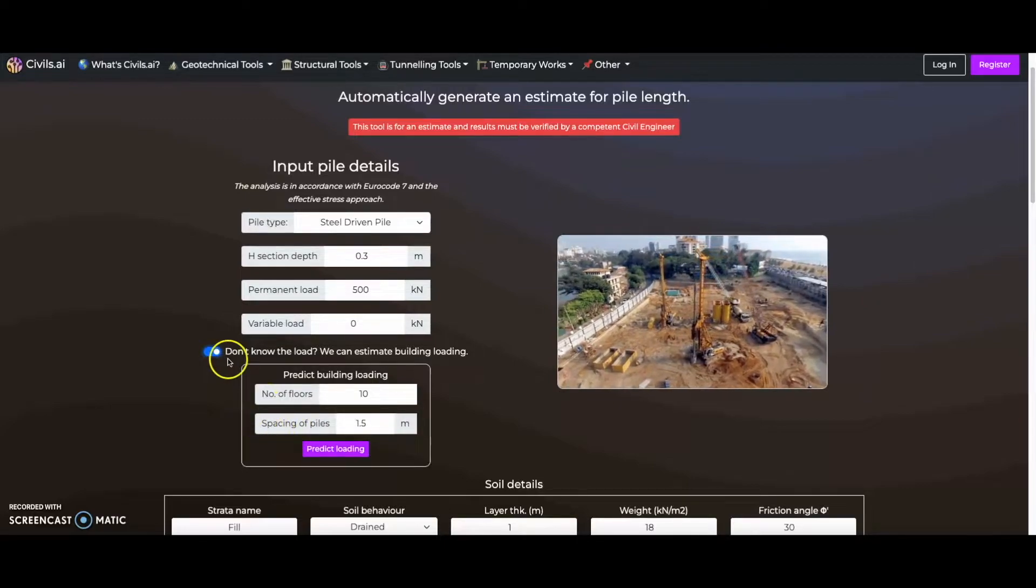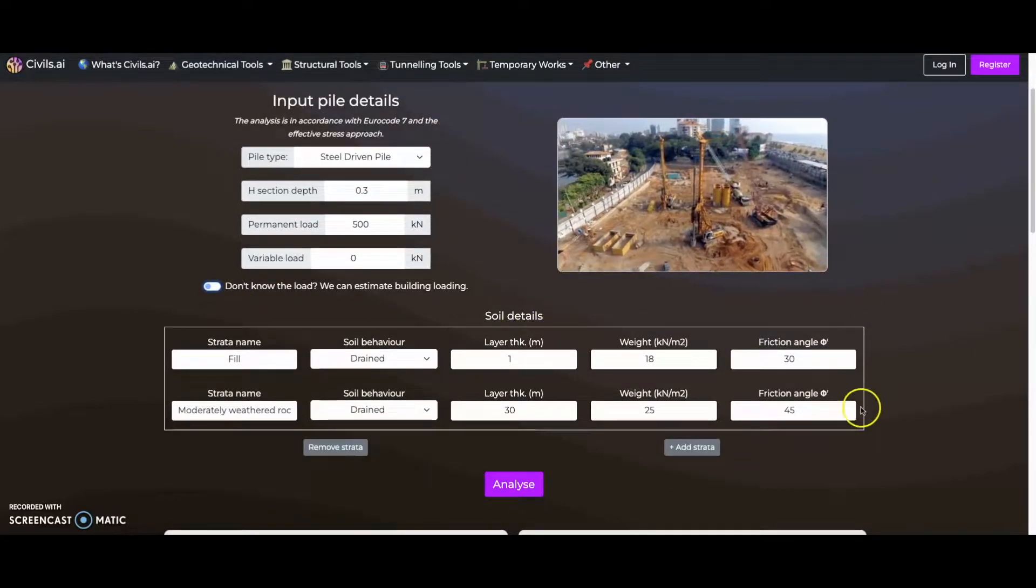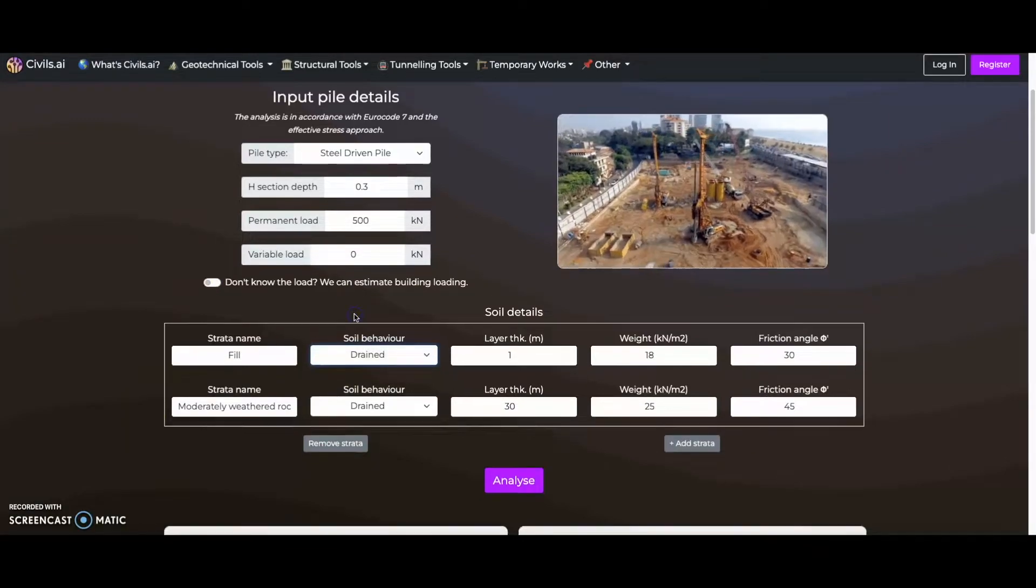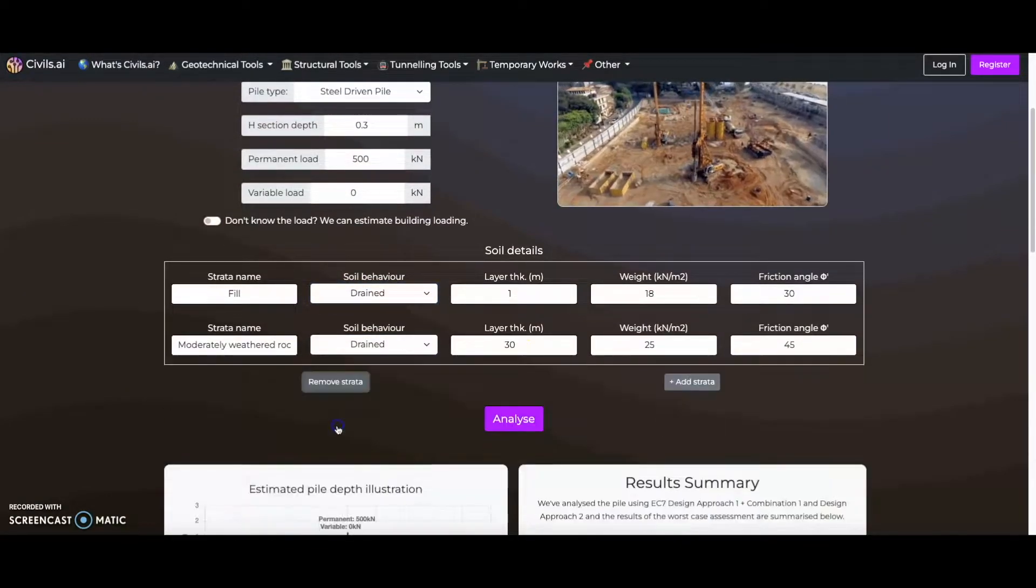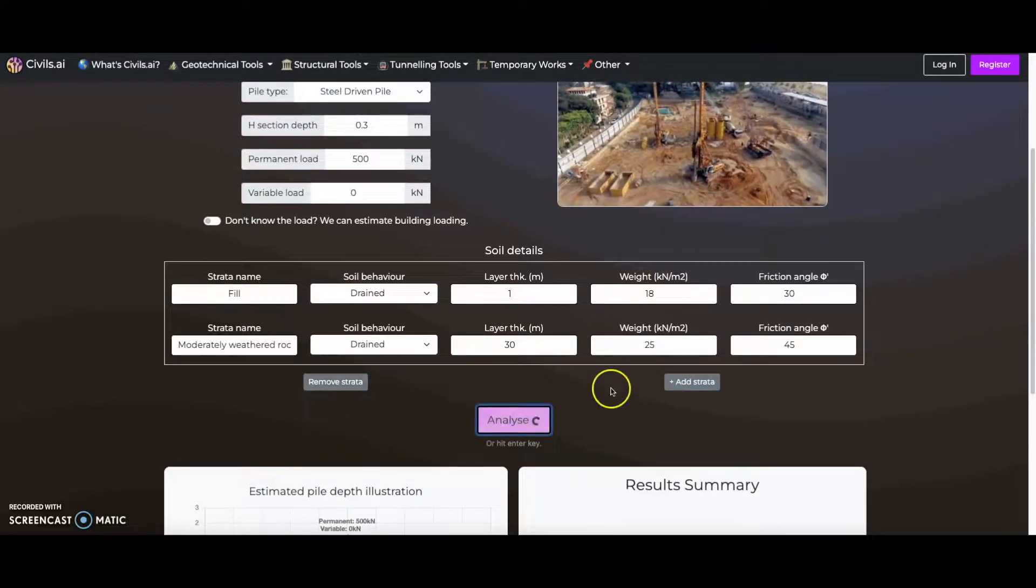You can enter the soil properties in the area of the piled foundation and adjust whether the soil behavior is drained or undrained. You can add or remove soil layers using these buttons. Finally, you can hit analyze or the enter key to generate results.